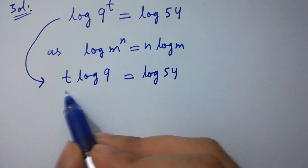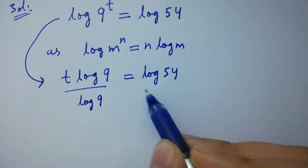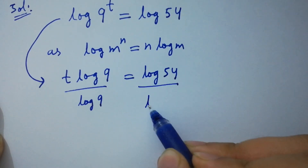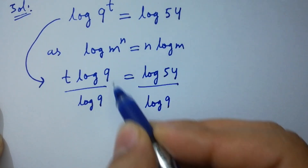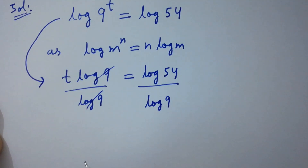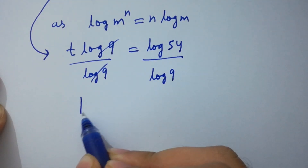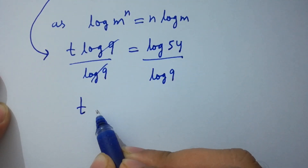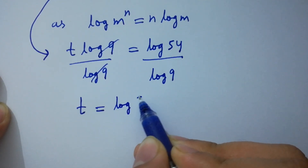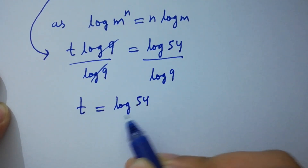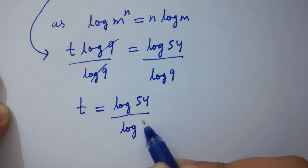Divide by log 9 on both sides. Log 9 and log 9 cancel, so t equals log 54 over log 9.